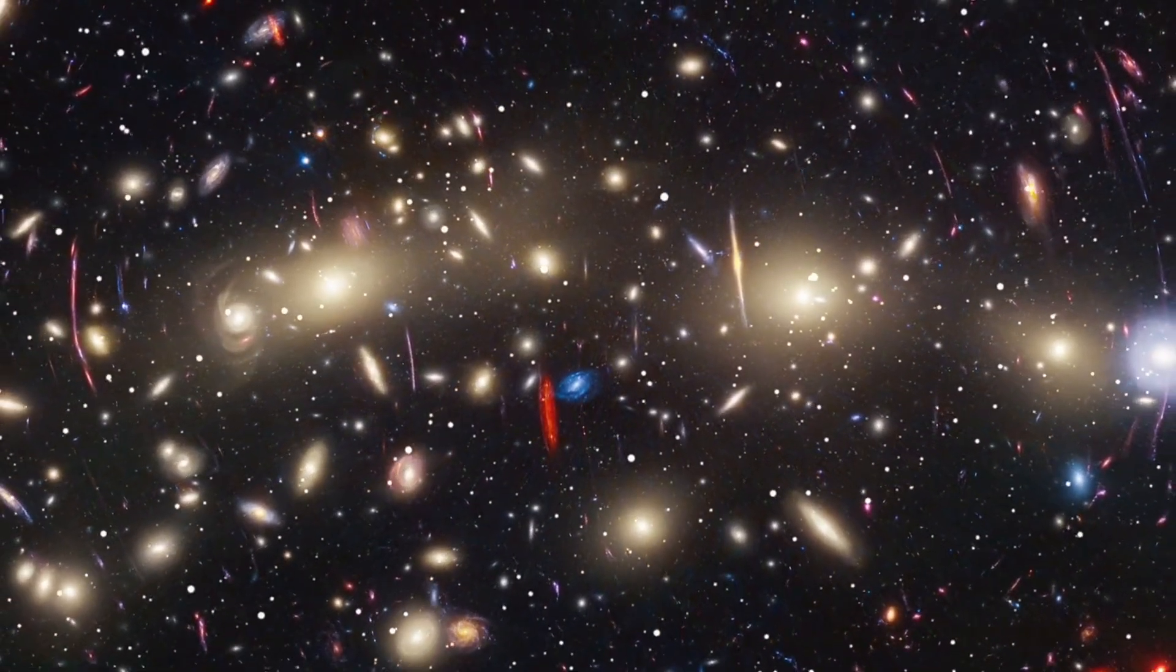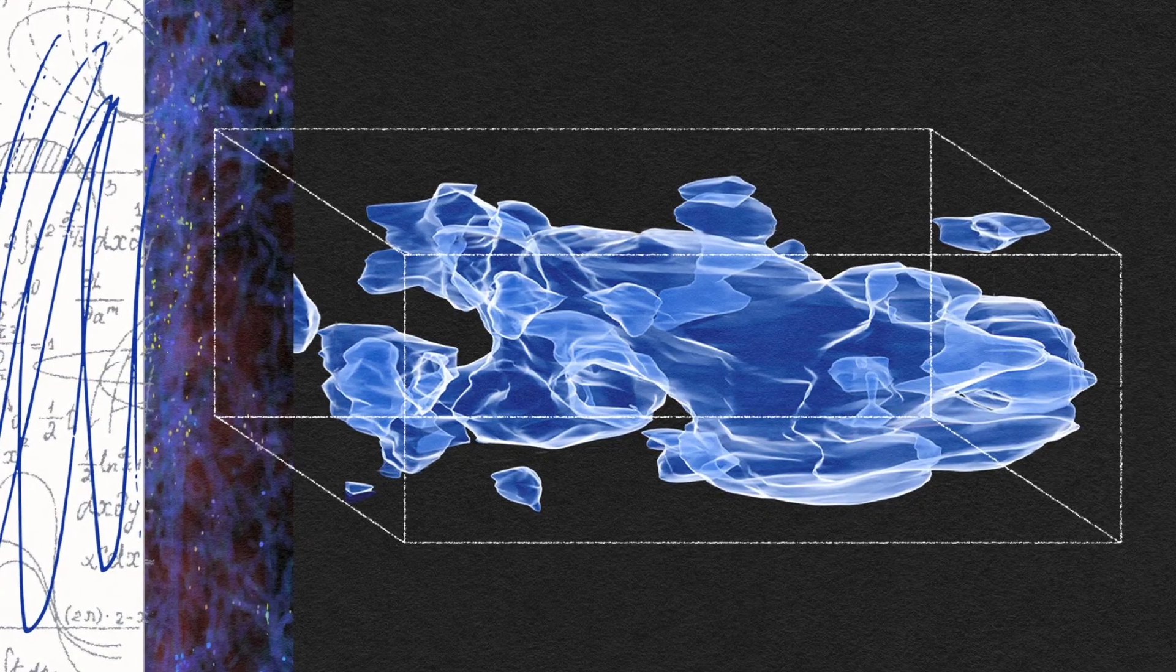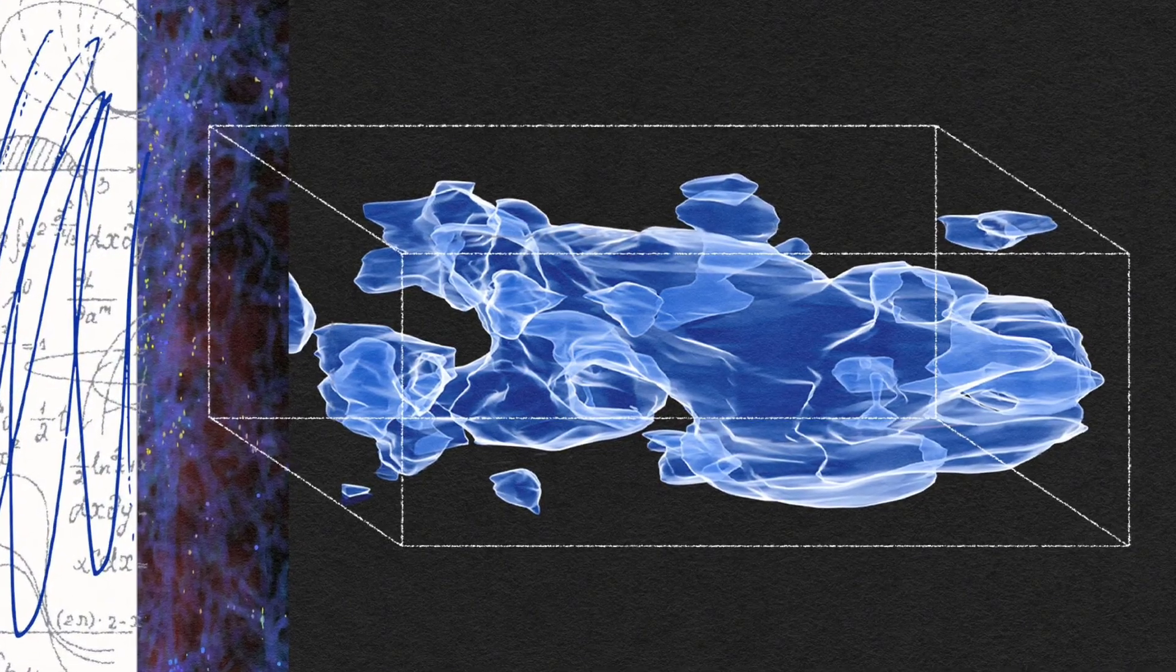What the theory of dark matter predicted is not what we see. Instead, what we do see looks an awful lot like what MOND predicted more than two decades ago.